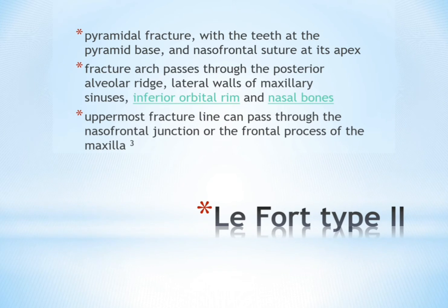Le Fort type 2 is a pyramidal fracture with the teeth at the pyramid base and the nasofrontal suture at its apex. The fracture arc passes through the posterior alveolar ridge, lateral wall of the maxillary sinus, inferior orbital rim, and nasal bones. The uppermost fracture line can pass through the nasofrontal junction or the frontal process of the maxilla.